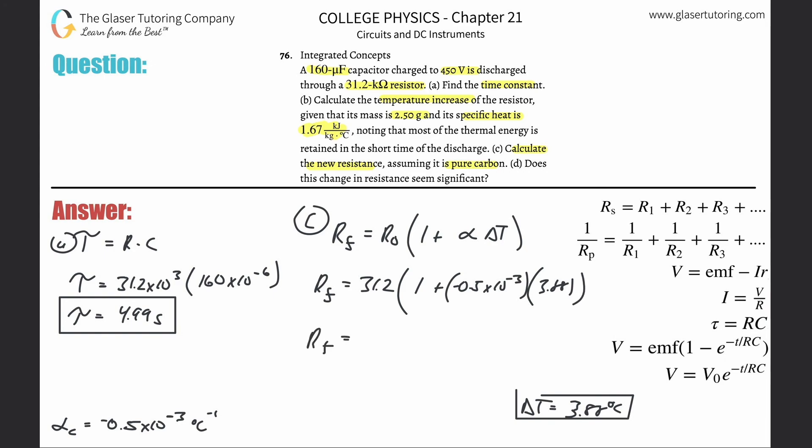Let's see what we get. So we're going to take negative 0.5 times 10 to the minus 3, multiply by 3.88, and we're going to take 1 and add it to that negative value. It comes out to 0.998 or so, and then multiply that by 31.2. So we get 31.1 kilo ohms. If you need that in ohms, just multiply by 10 to the 3.